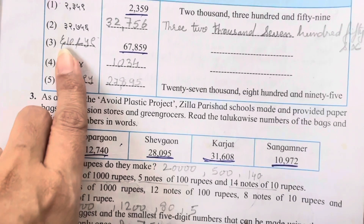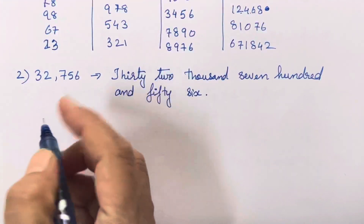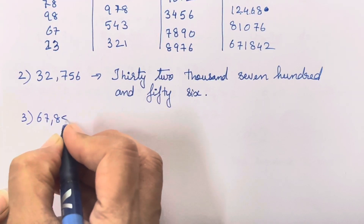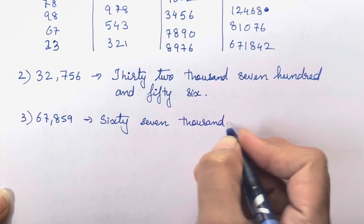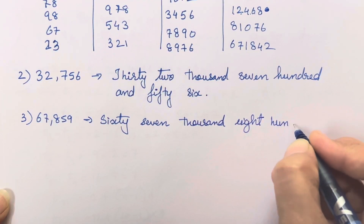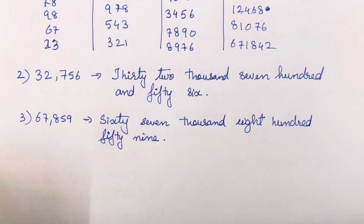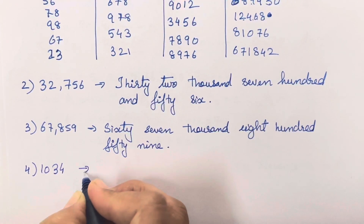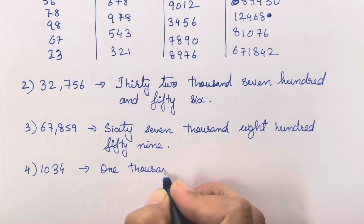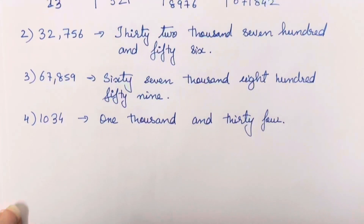In this way you have to write the second and third ones. For the third one, the English number 67859 is given and you have to write it in words: sixty-seven thousand eight hundred and fifty-nine. The fourth one is 1034 - write it down: one thousand and thirty-four.